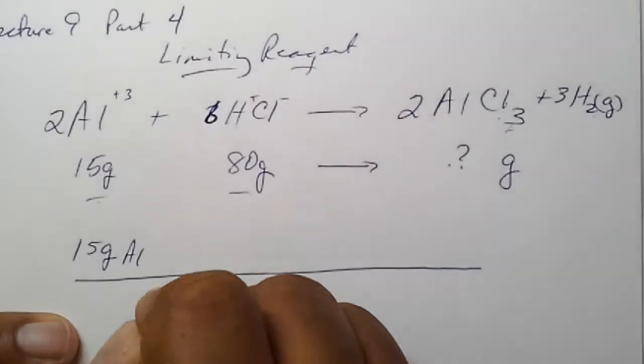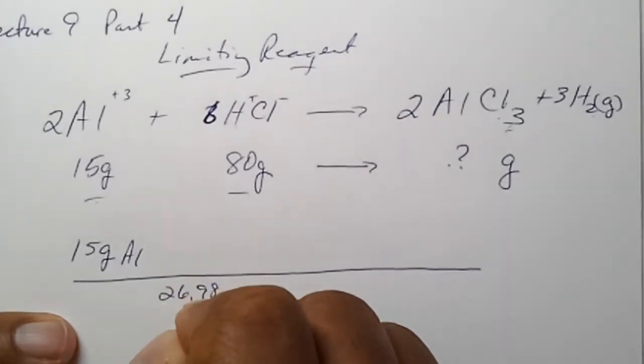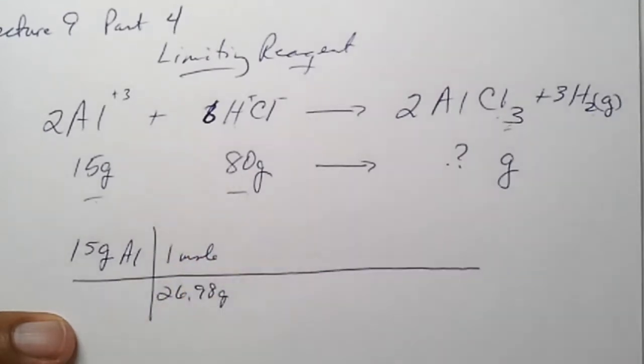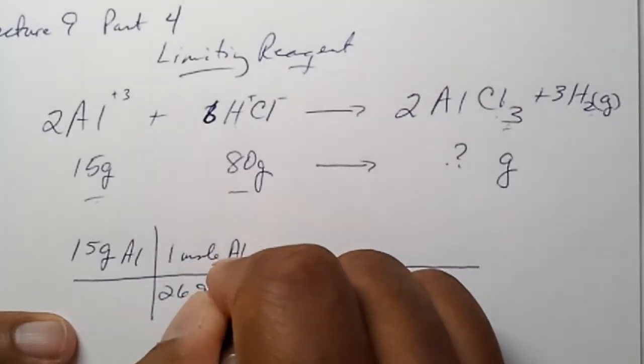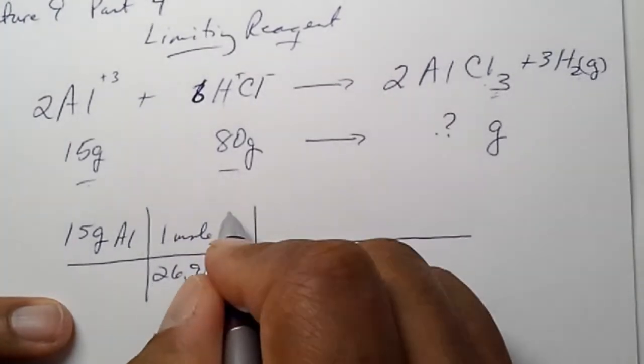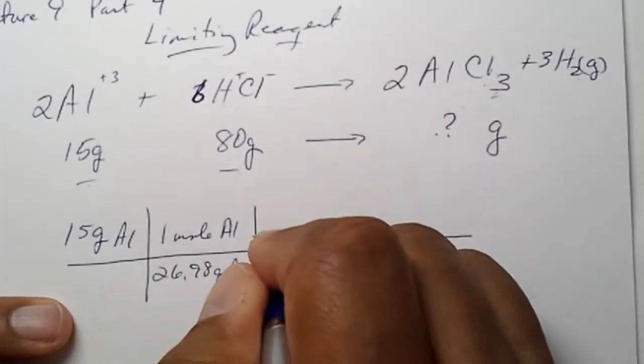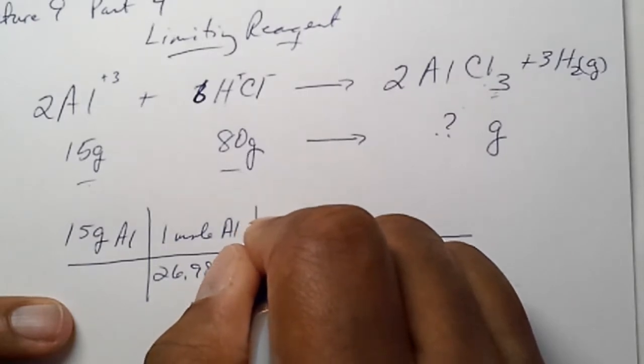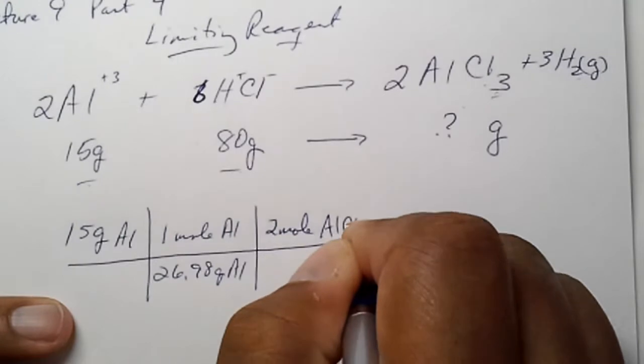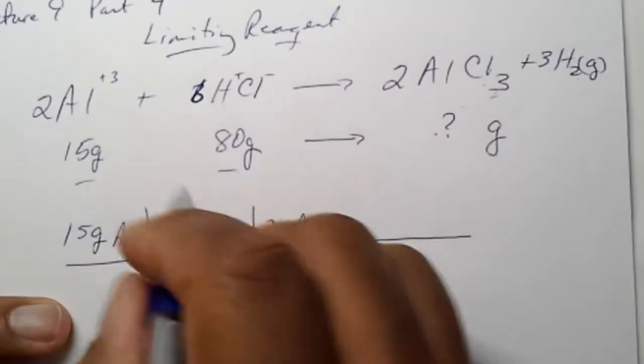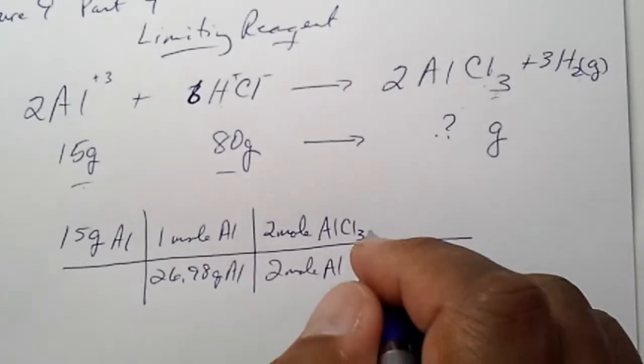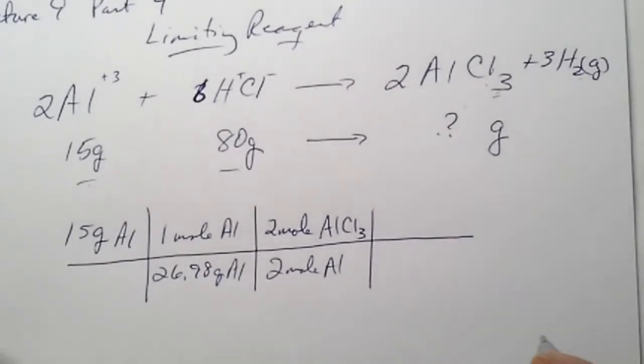Okay. 26.98 grams per mole of aluminum. All right. What's the mole ratio of aluminum to our product? We have two moles of aluminum chloride for every two moles of aluminum.